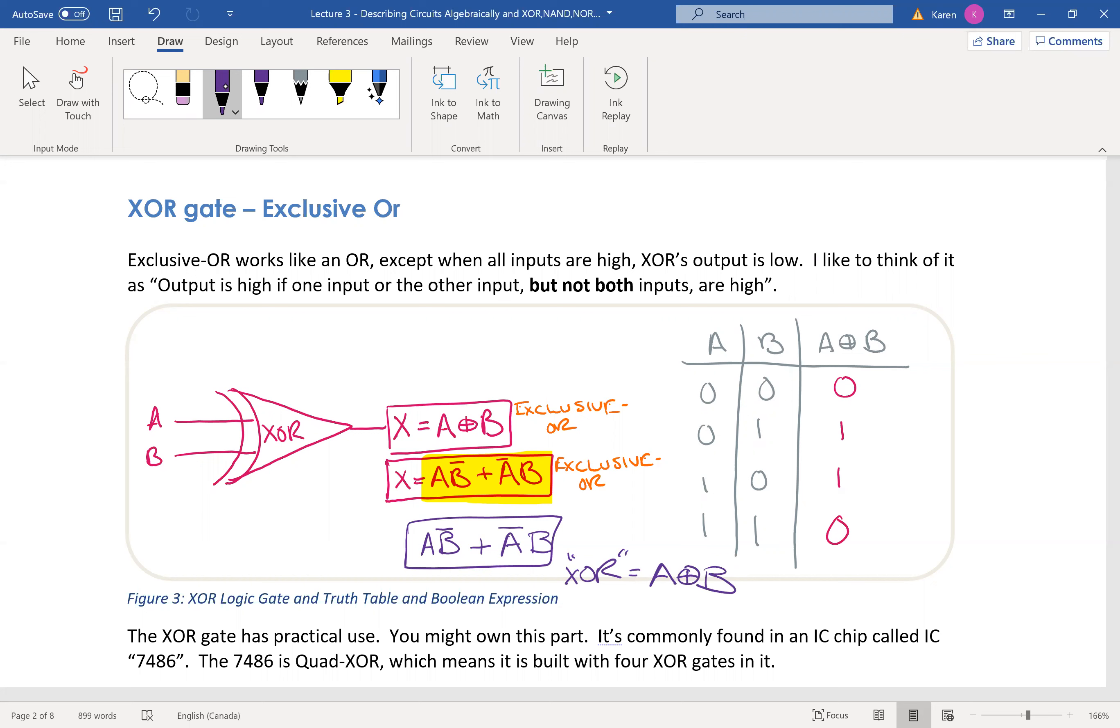Exclusive OR means one OR the other, but exclusively one or the other, not both. So if one OR the other is high, then the output of an exclusive OR is high. That differs from an OR gate. An OR gate is not exclusive. It's high if one of them is high, the other one's high, or both of them are high.